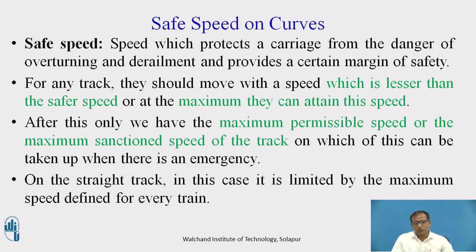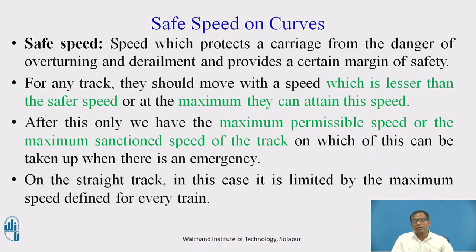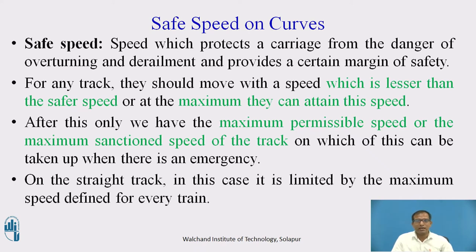On a straight track there is no major issue, but when a vehicle travels on curves, we must define what the safe speed or maximum permissible speed on those curves is. On curves, we may be constrained by the radius or degree of the curve, or by the transition curve. If there are such constraints, we must define the safe speed on curves. Otherwise, it could result in derailment or wear and tear of the track due to higher speed on that particular curve. Trains should move at a speed lesser than or up to the safe speed.